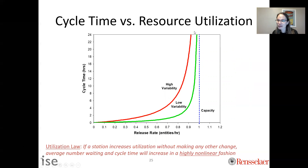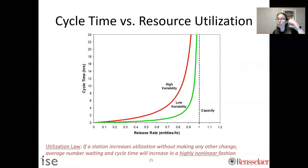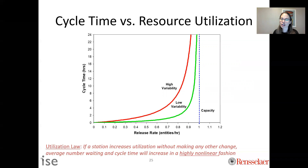So the key point is: if you have variability in your system, do not release things at 100% utilization. The question is, where should you release things? What should your capacity planning decision be? A rule of thumb is around 80%. For a given curve — say the green curve — you want to find the range where, as your resource gets more utilized, cycle time goes up but still somewhat linearly. You want to prevent it from going into the crazy nonlinear part where cycle time skyrockets. This is a function of variability: higher variability shifts the curve, meaning you hit the nonlinear region sooner.